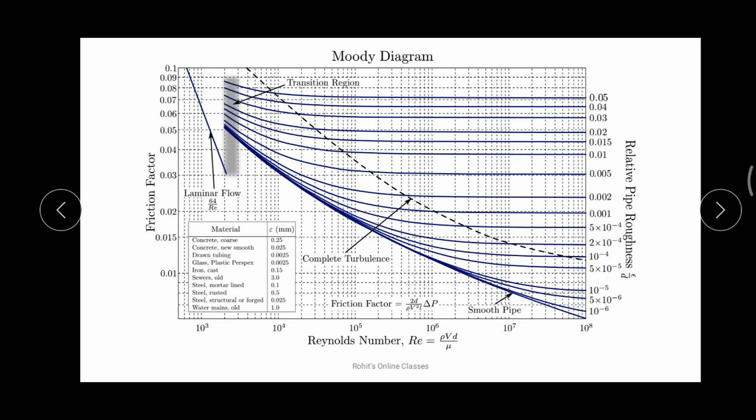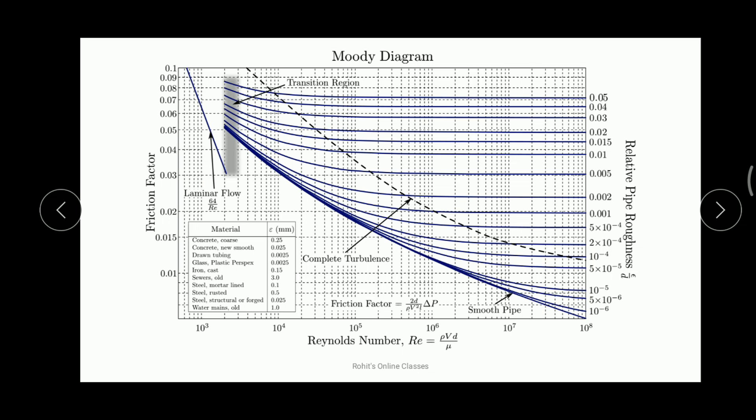The grayish portion on the diagram is the transition region. If the value of Reynolds number lies within this band, the flow is transitional. Above the upper dotted line, the diagram shows the complete turbulence zone — the turbulent flow region is represented above this line.